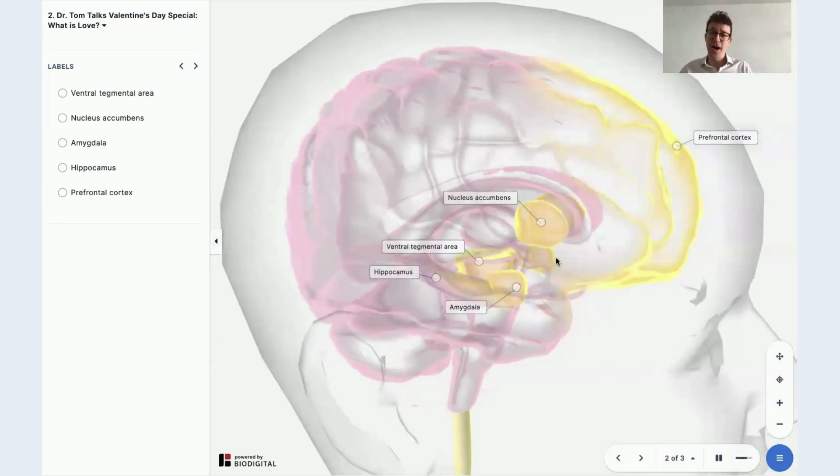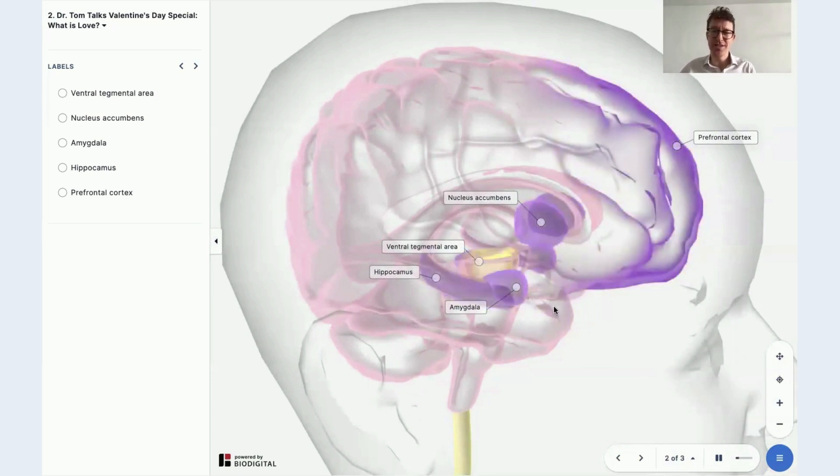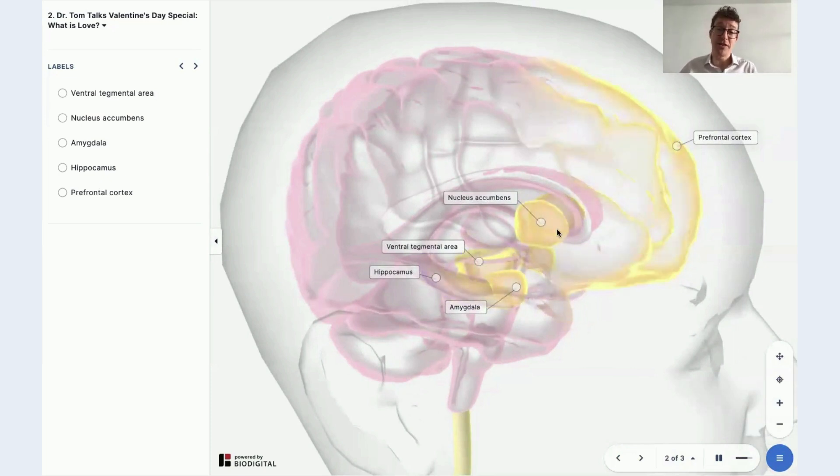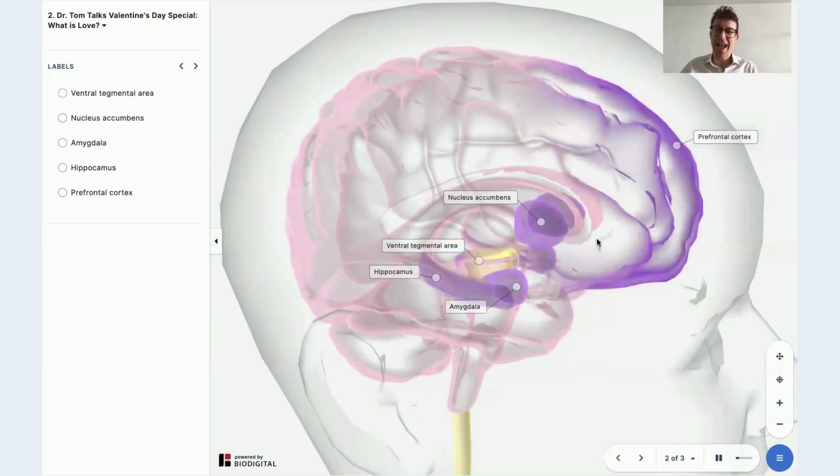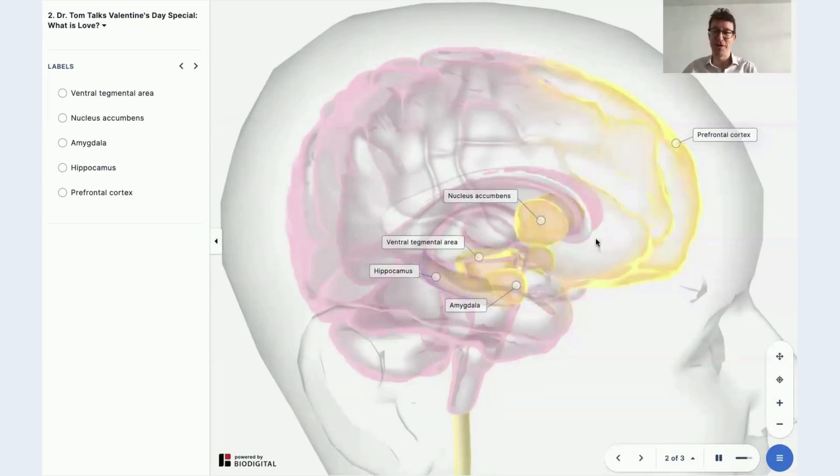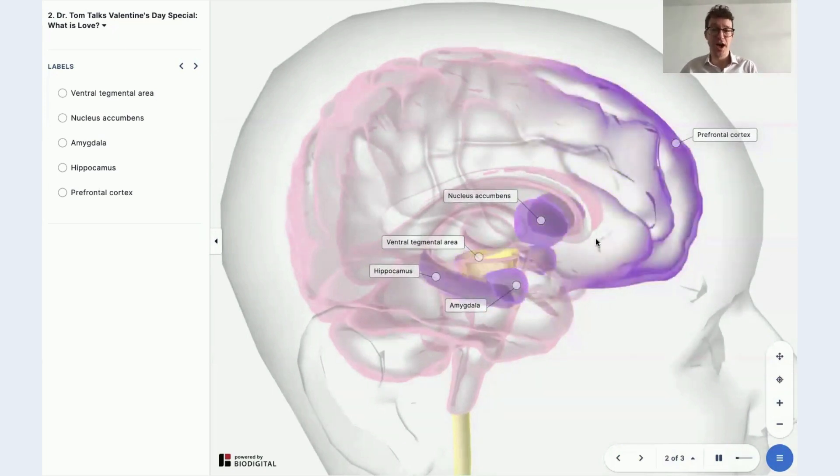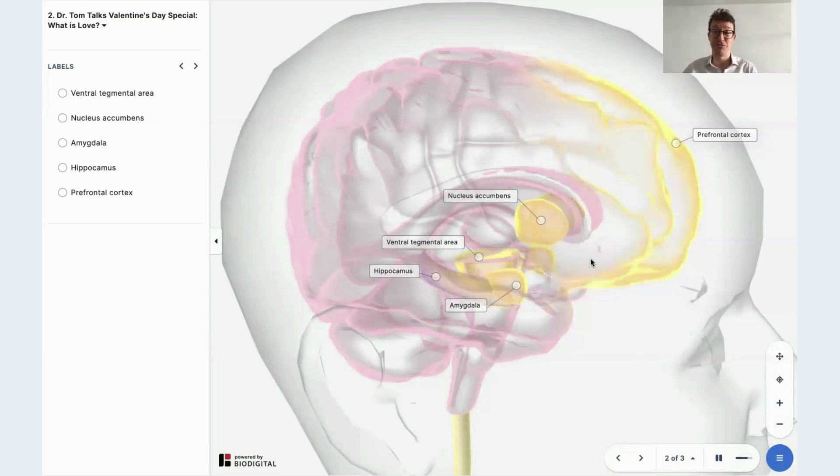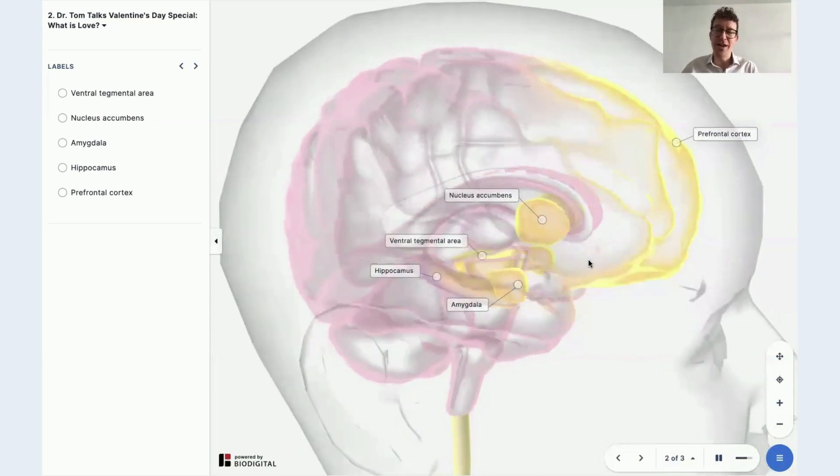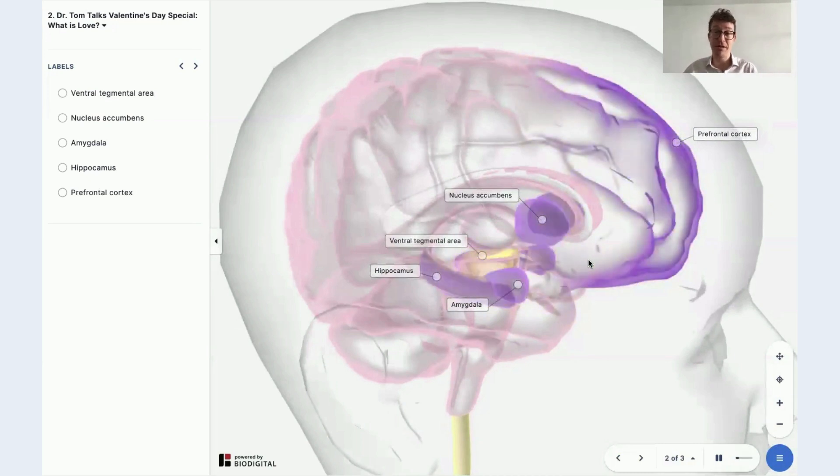So thirdly, I want to talk about oxytocin. So this is a hormone which has a big effect on the nucleus accumbens right here, and this is the neuromodulator that we refer to as the commitment neuromodulator. This is what gives us a real bond with someone. And it's a really interesting hormone because if you look at prairie voles, for example, if they're injected with oxytocin or vasopressin, they immediately go off and find a partner.